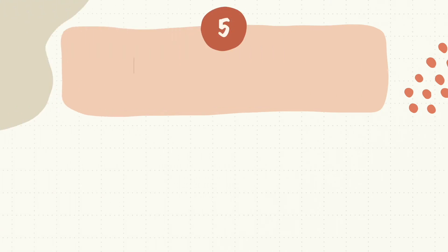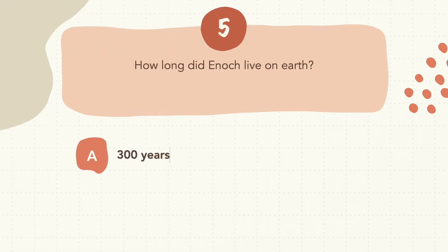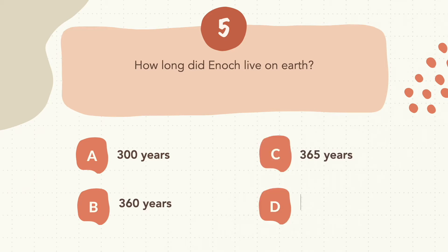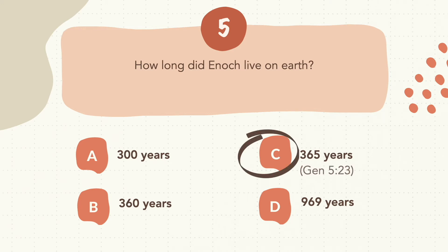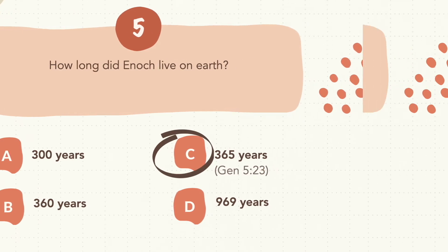Question 5: How long did Enoch live on earth? The correct answer is C, 365 years.